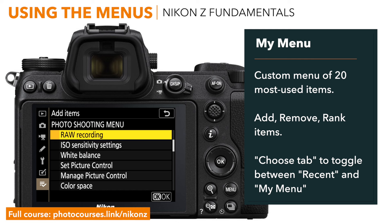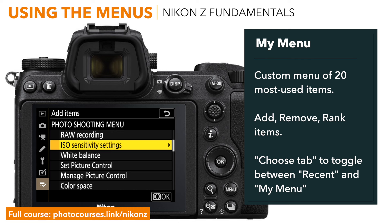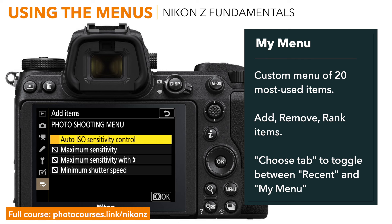Some items let you put sub menus into my menu. For example, in the photo shooting menu, you see ISO sensitivity setting has an arrow next to it. That means that if you press the multi selector right, you can enter that sub menu. And then what I do is I put auto ISO sensitivity control on or off as a top level item in my menu for faster access, so I don't have to go into that sub menu. It's there at the top.